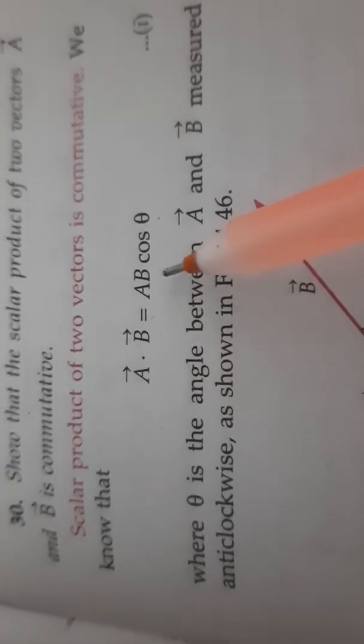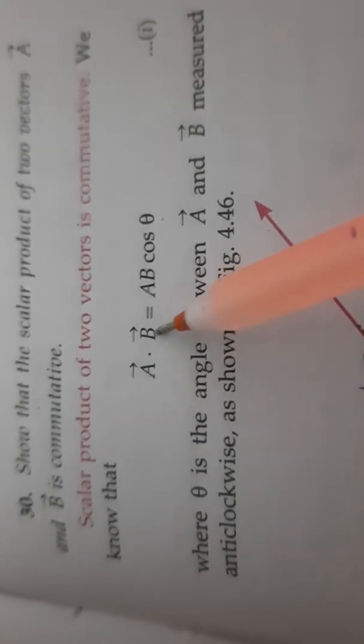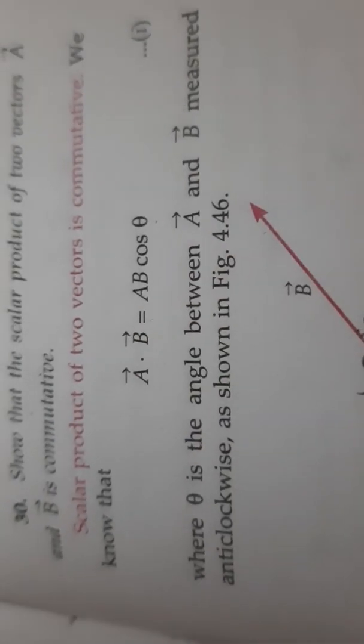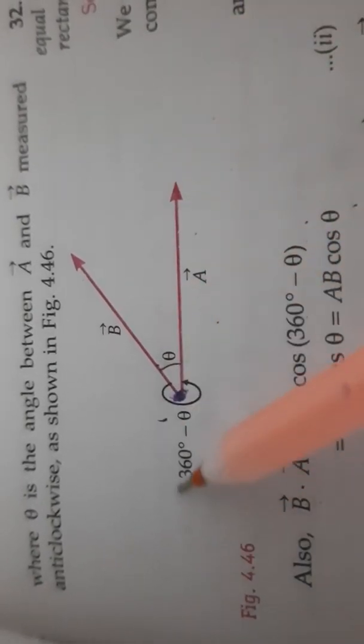If this scalar product will be commutative then A dot B will be equal to B dot A. For that we have to make a diagram. This is the A vector and this is the B vector and this is the angle between them theta.